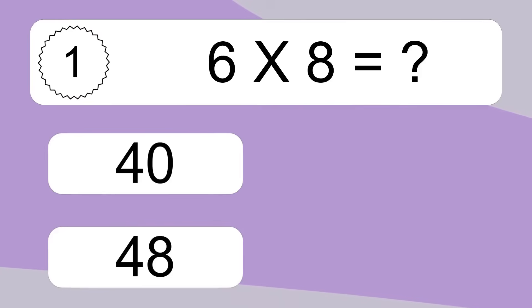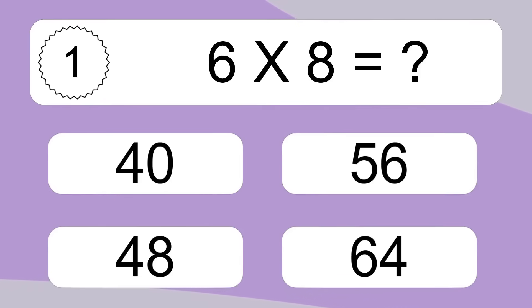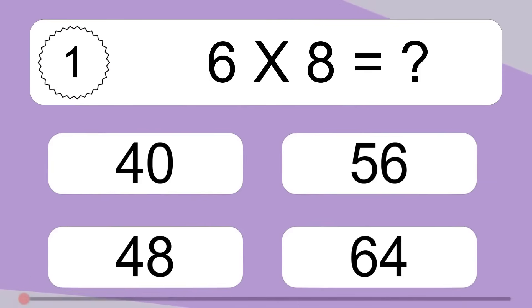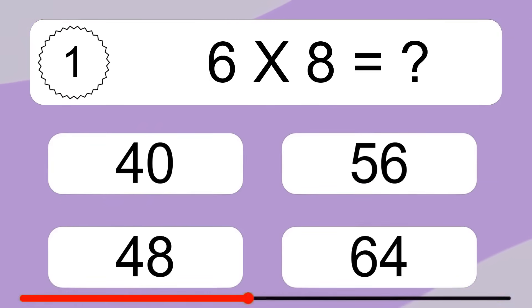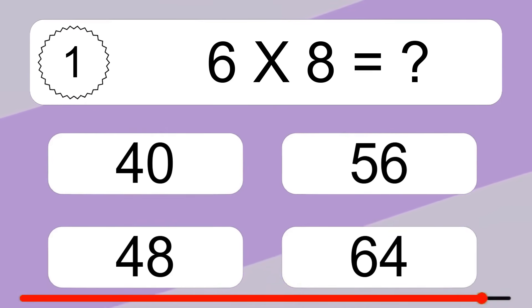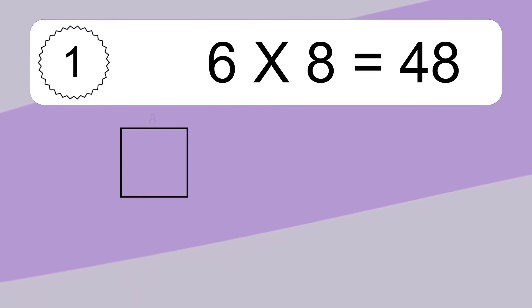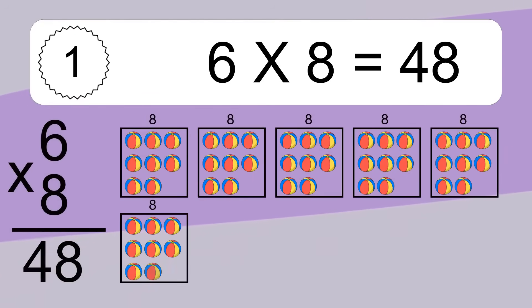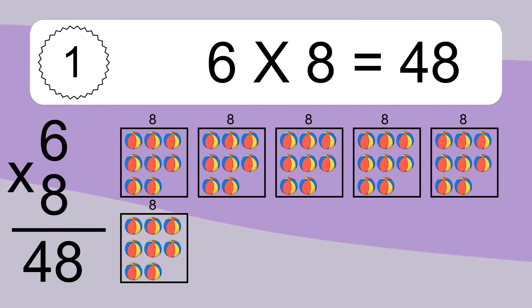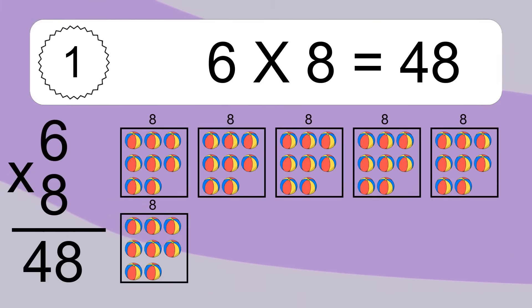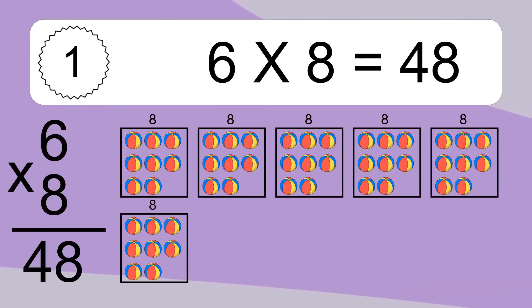Six times eight equals what? Six times eight equals 48. We have six boxes, and each box has eight colorful balls inside. If you count all the balls in all the boxes together, you will have six times eight balls. This equals 48 balls.